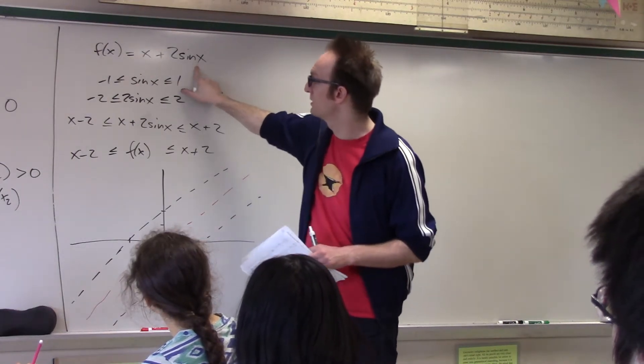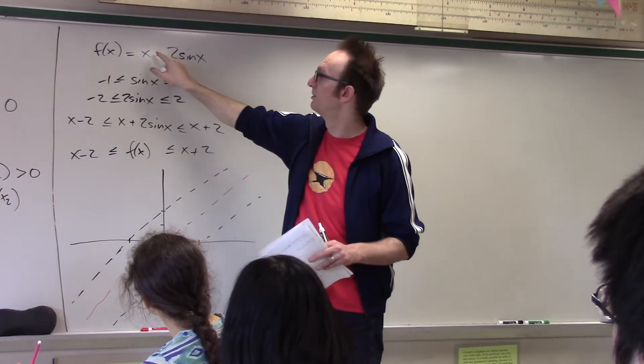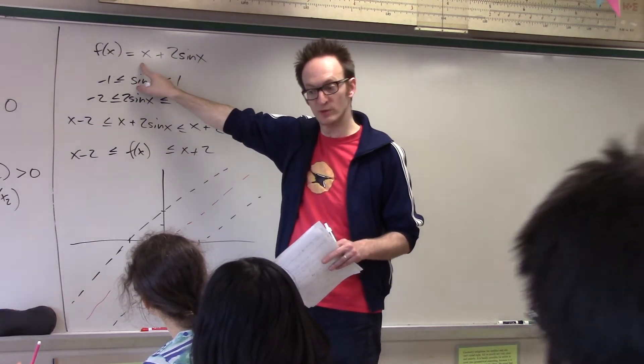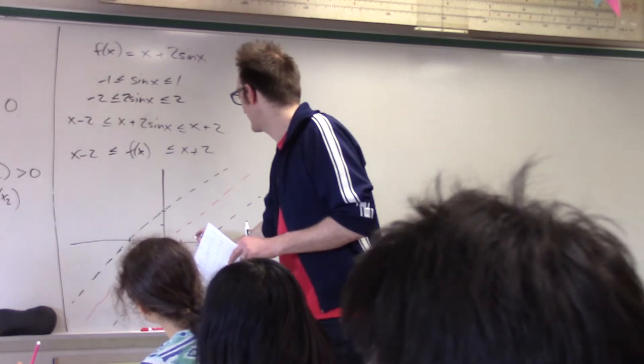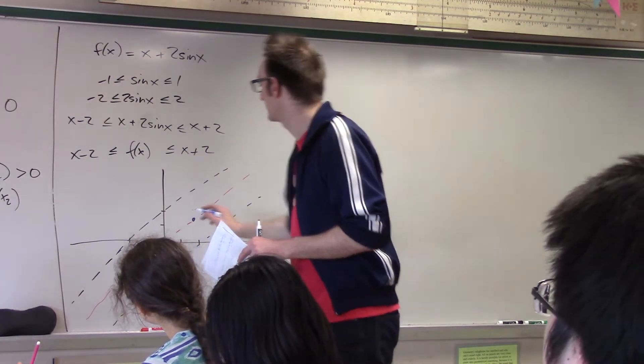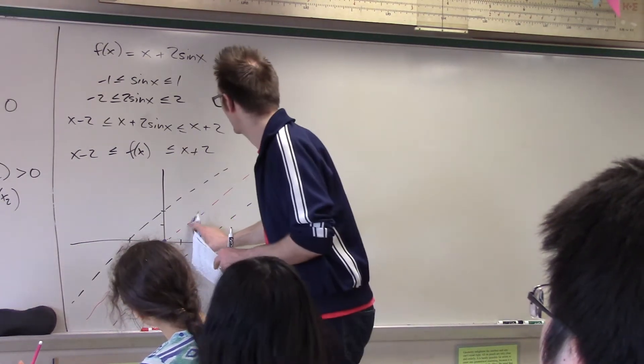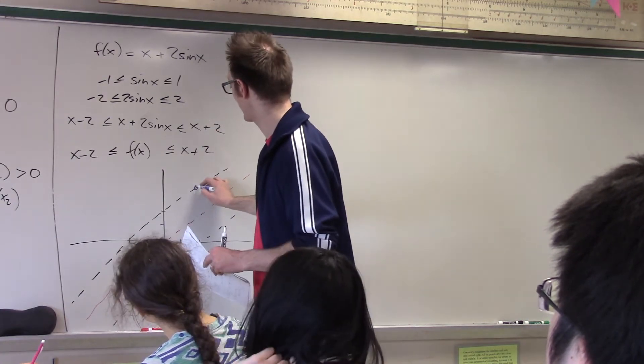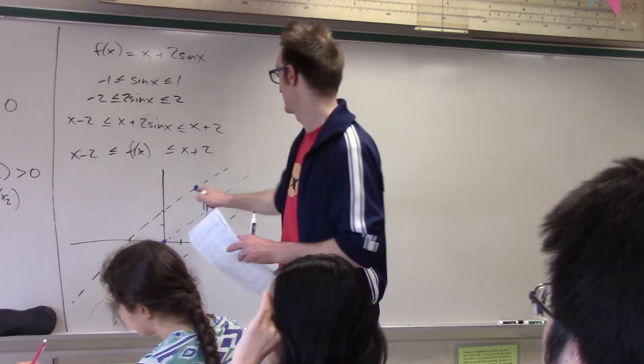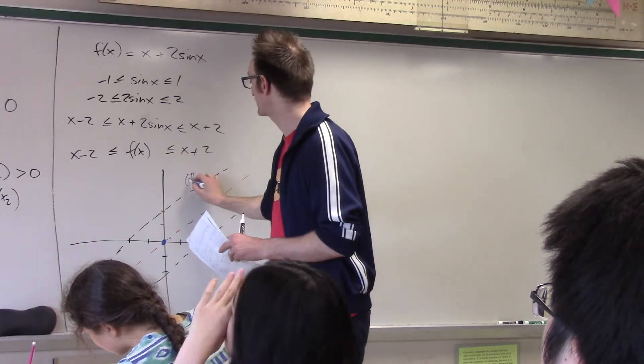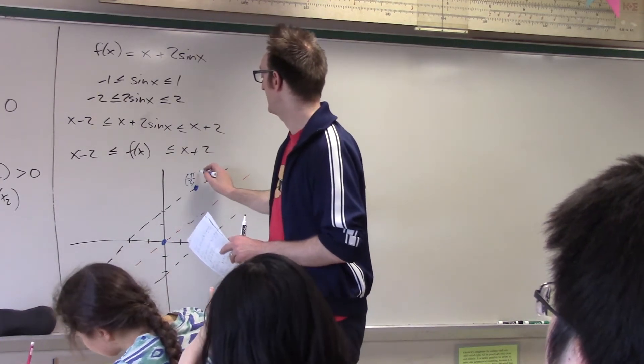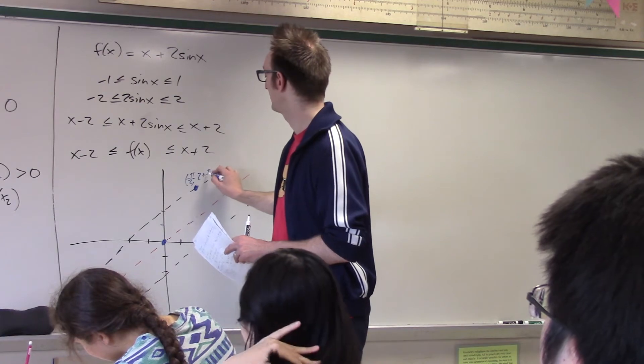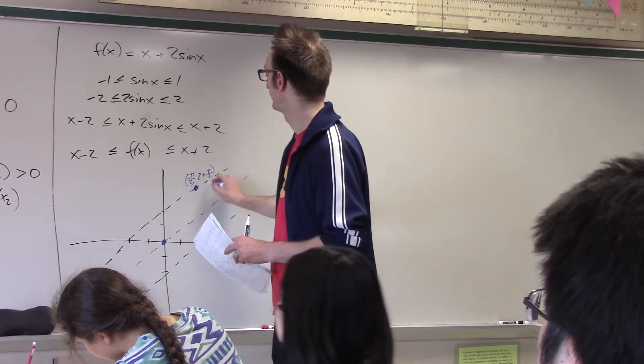Pi, if I plug in pi over 2, sine of pi over 2 is 1, so I'll be 2 plus pi over 2, right? So, I'm going to be, like, if that's pi over 2, I'm going to land on the top line, on the top envelope, right? So, that number is pi over 2, comma, 2 plus pi over 2.